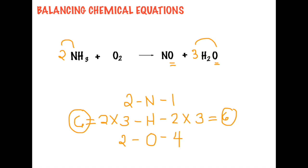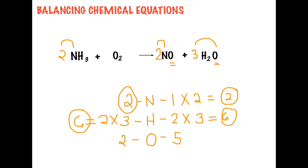As mentioned, we balance oxygen last. Since there are two nitrogen on the reactant side, we multiply nitrogen on the product side by two to balance it. Now we have two nitrogen on both reactant and product side. That changes our oxygen on the product side to two plus three, which is five. If you encounter an odd number on the product side for oxygen, multiply the reactant side's oxygen by the fraction 5/2, so that when you cancel it out, you get five.